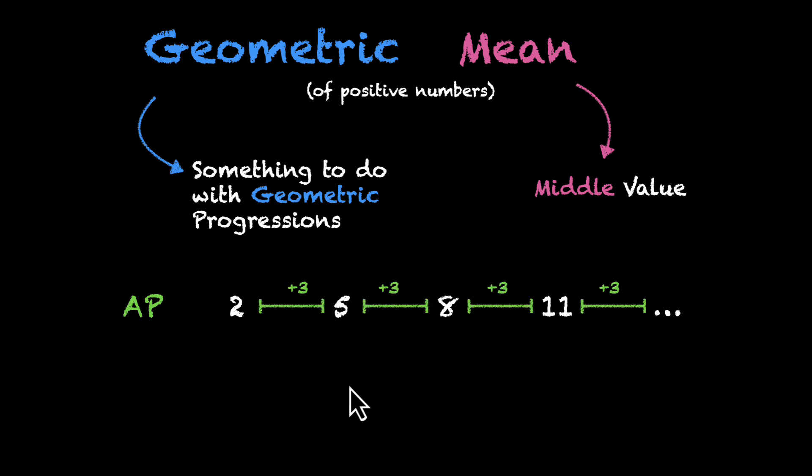So to talk about the arithmetic mean or the middle value, let's take two of these. Let's take 2 and 8 and find their middle value. Well clearly their middle value is 5. That becomes the arithmetic mean of 2 and 8.